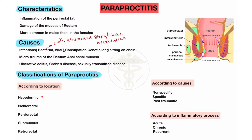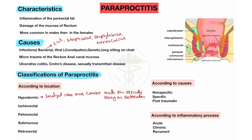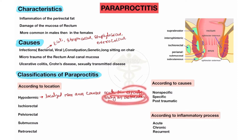First, hypodermic Paraproctitis: when Paraproctitis is localized near the anus, it causes acute pain — especially strong acute pain during defecation. It is localized near the anus region. This is the hypodermic type of Paraproctitis, localized near the anus and causing strong pain especially during defecation.